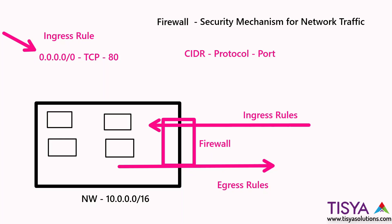Whereas if I have my office network, which is also connected to this network — let's say this is a cloud network and I only want people available on a particular network — let's say my office network is 192.168.0.0/16. I will also want TCP port 22 to be open, which means only from source IP addresses starting with 192.168, TCP 22 will be allowed; for others it will not be allowed.